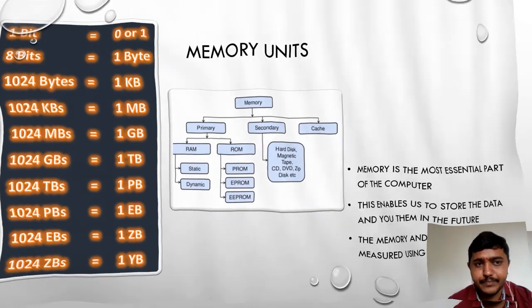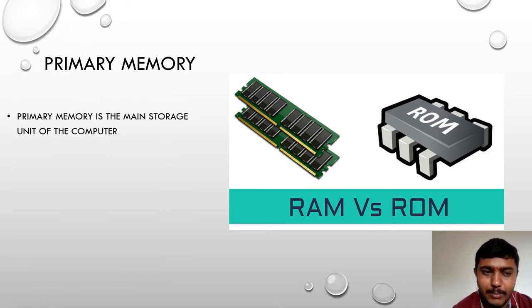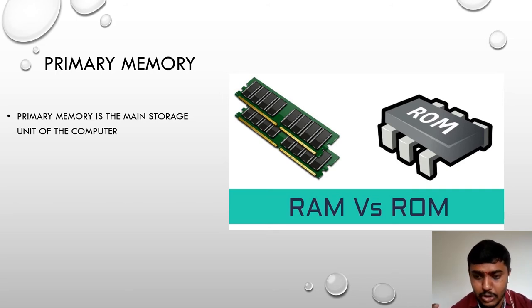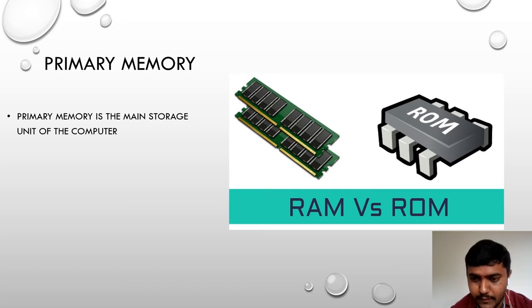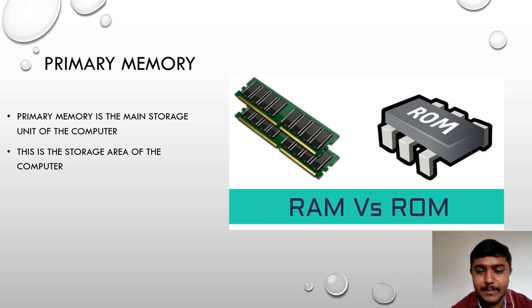Primary memory is also called RAM and ROM. It is the main memory of your computer system where data is stored for processing, accessed through primary memory itself. Primary memory is called volatile memory — data entered into it is temporary. Once the power goes off, the data will not be available. Primary memory is the main storage area of your computer.